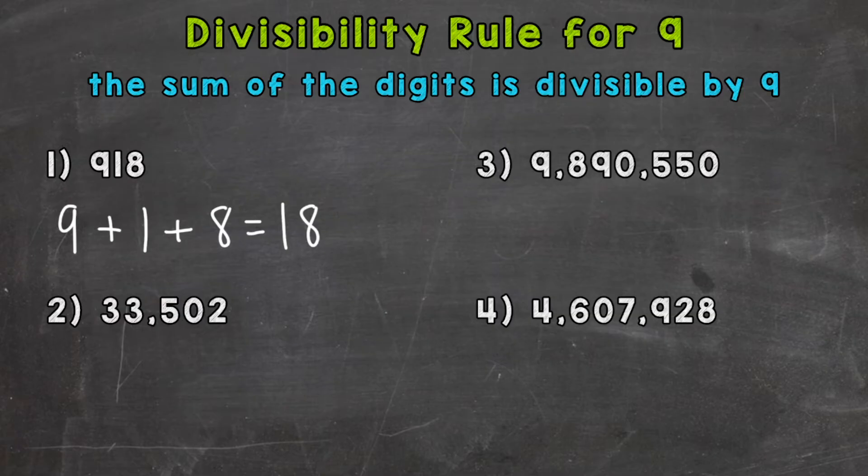Now is 18 divisible by 9? Yes, because if we do 18 divided by 9, we get an answer of 2 without a remainder. So since our sum of 18 is divisible by 9, that means our original number 918 is divisible by 9 as well.